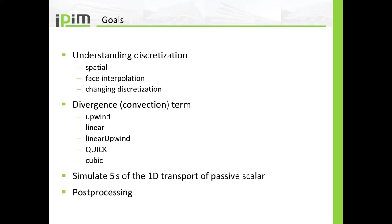I will concentrate on the divergence term. If you watched my last tutorial, then you know that this is the convective term and I will use five schemes: the upwind scheme, the linear scheme, linear upwind, quick and cubic. I will simulate five seconds of the one-dimensional transport of a passive scalar — the same case I used in the last tutorial. In the last tutorial I changed physical values like the velocity or the diffusivity, but in this tutorial I will change numerical settings.